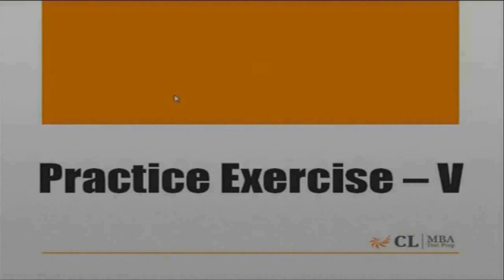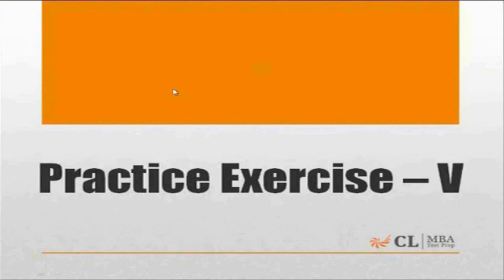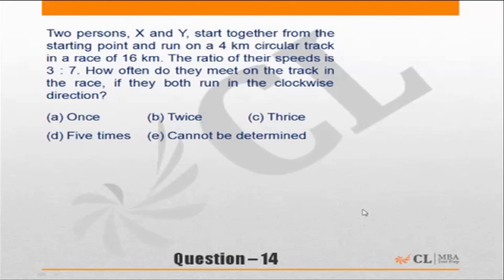Practice Exercise 5: Time, Speed, and Distance. Let's go through Question 14. Two persons X and Y start together from the starting point and run on a 4-kilometer circular track in a race of 16 kilometers. The ratio of their speeds is 3 to 7. How often do they meet on the track in the race if